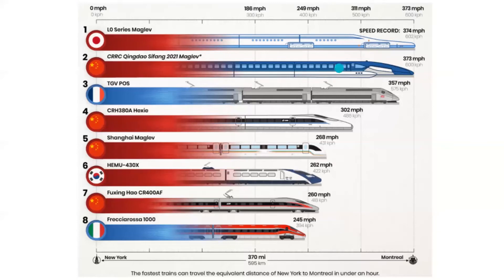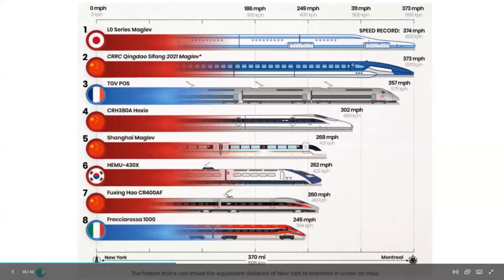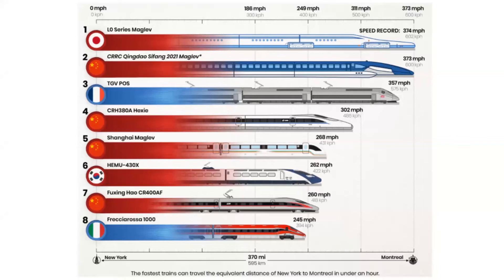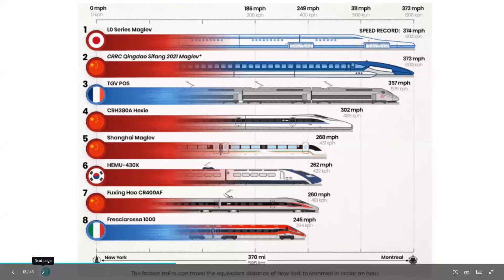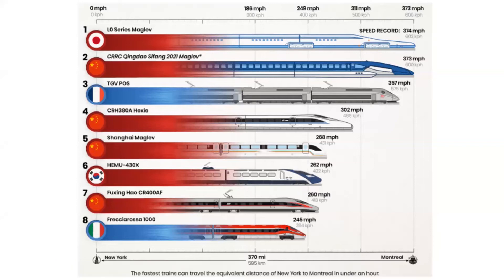You can see different names of trains being developed by different countries. Japan's L0 series achieved 373 miles per hour — over 600 kilometers per hour. China and Japan are the countries having the fastest trains working using the concept of magnetic levitation.